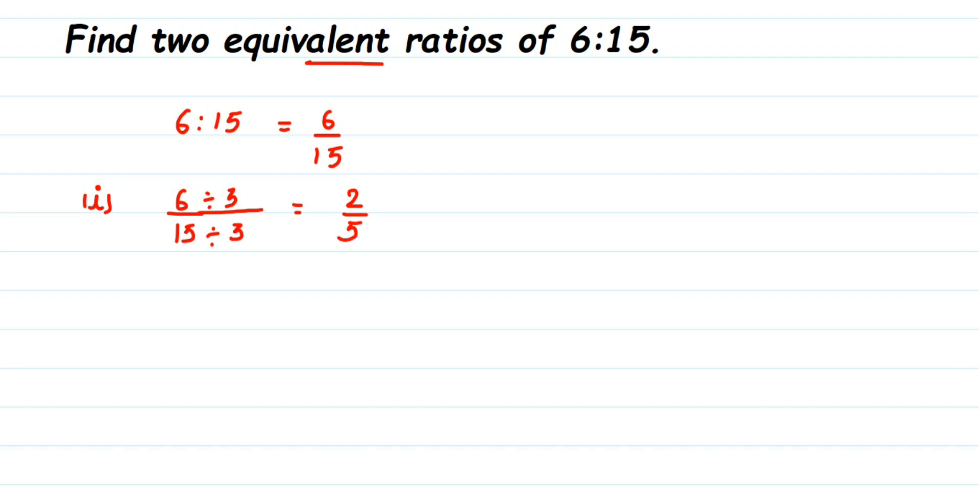So we can say that 2 by 5 is an equivalent fraction of 6 by 15. But we know that fractions can be converted into ratios, so this is equal to 2 is to 5. So 2 is to 5 is an equivalent ratio of 6 is to 15.